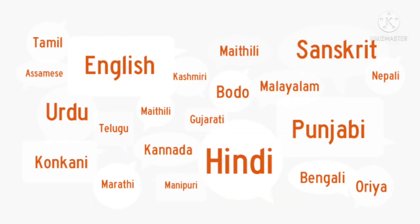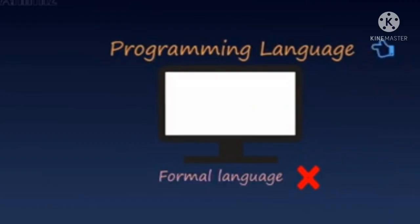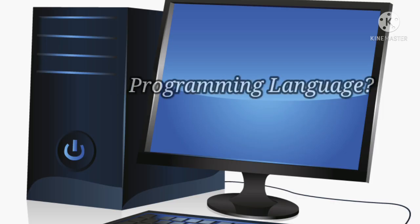We can use languages like English, Urdu, Hindi, or any other language to communicate. But a computer does not understand all these languages — a computer just understands programming language. So the question arises: what is a programming language?